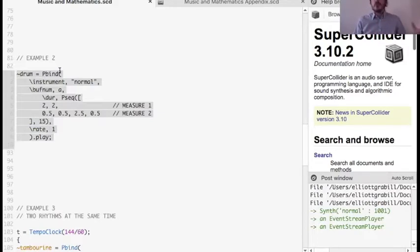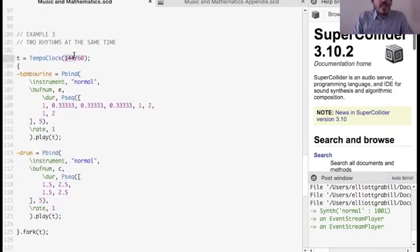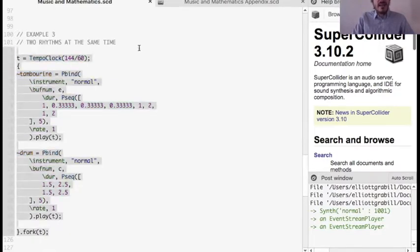Now, sometimes I don't always want a tempo to be 60 beats per minute. Sometimes that's a little bit slow. So in this example, I've made it so that the tempo is 144 beats per minute. So each beat in this case lasts a little bit less than half of a second. Let's listen to what this sounds like. I'm going to highlight all of this.